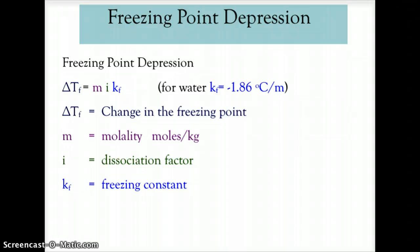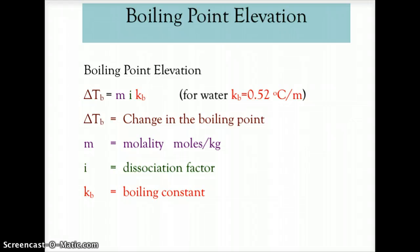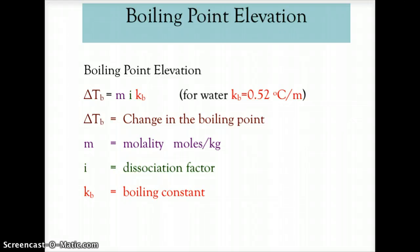So, once again, we're dealing with freezing point depression as delta Tf — the change in freezing temperature — equal to molality times i times Kf, or M-i-K. For boiling point elevation, the change in the boiling point, we use the same formula. However, we call it delta Tb, the change in temperature for boiling. We still use molality, a dissociation factor, and here the constant is Kb — the constant for boiling. For water, that value is 0.52 degrees Celsius per molal. If another substance is the solvent, a data table would be provided or the value given in the problem.